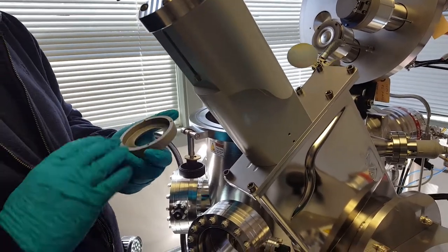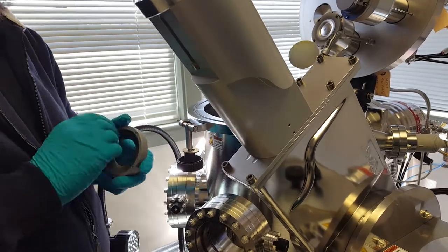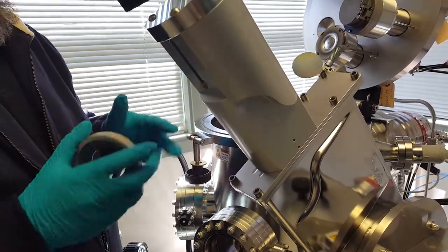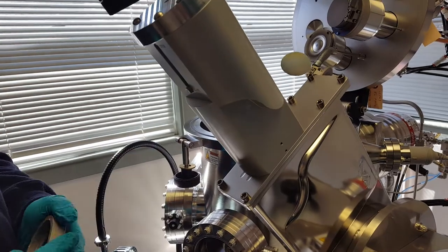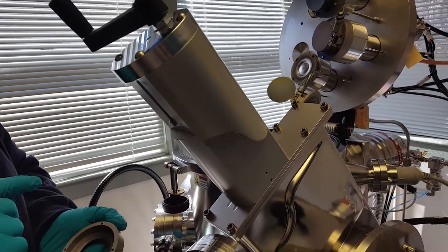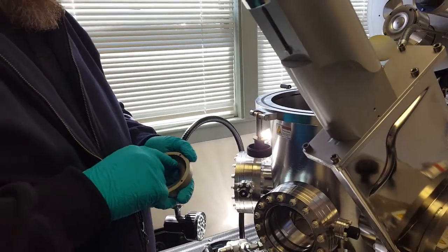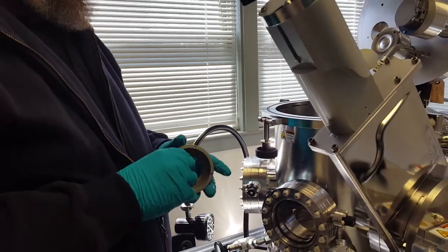Some people use like a Scotch-Brite or just get in here and vacuum up any particulates. That's good to do on a regular basis. But eventually you might end up with so much coating here that you'll need something more heavy duty to get it off.